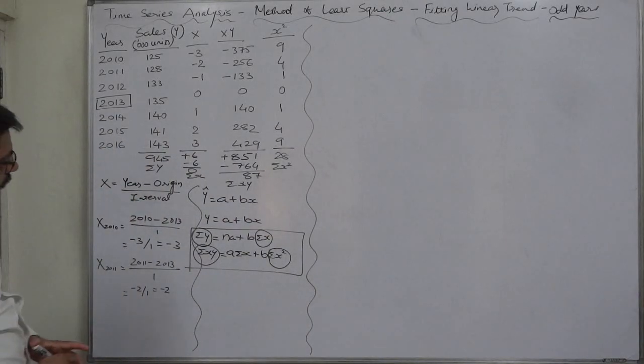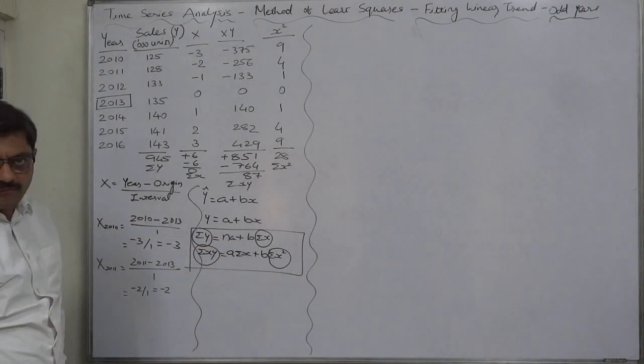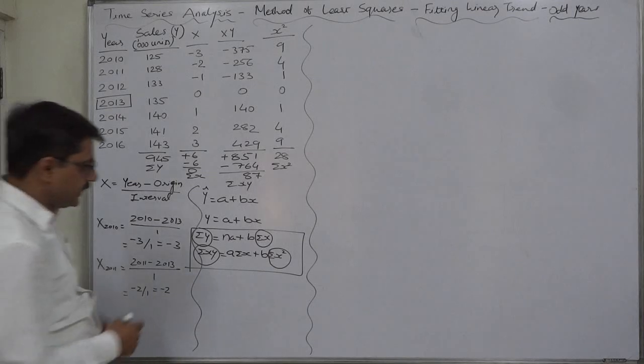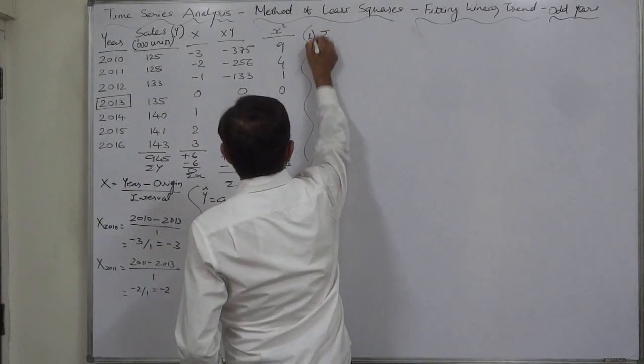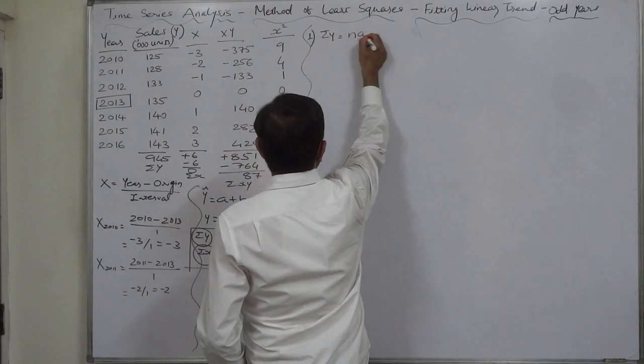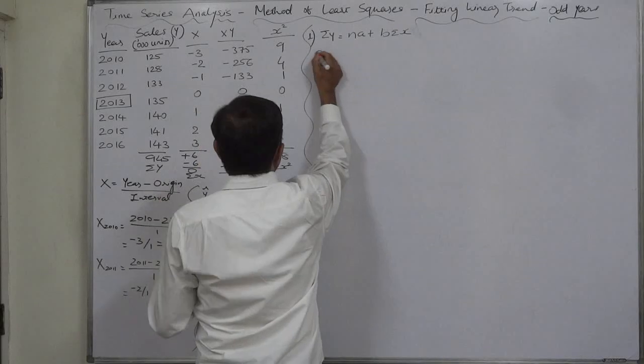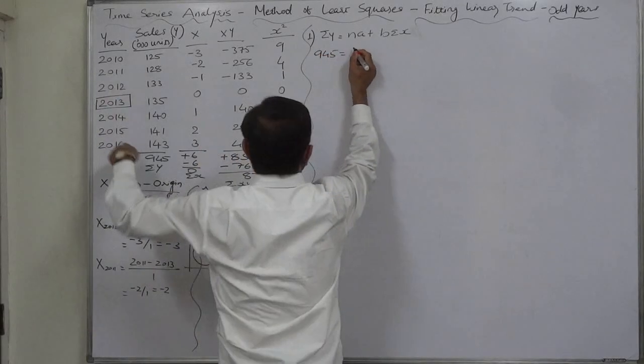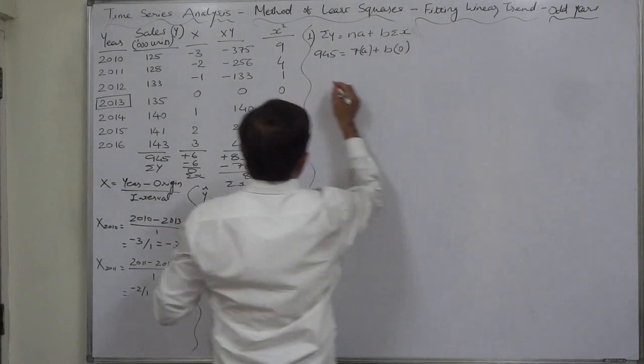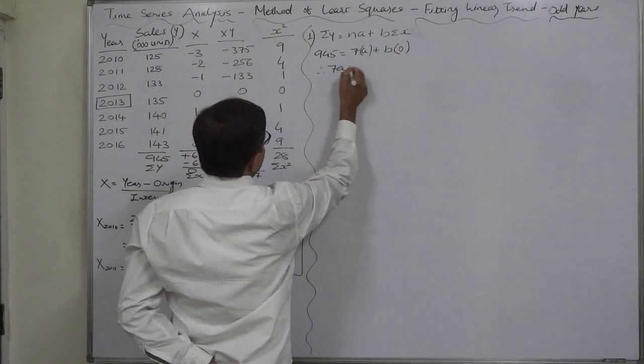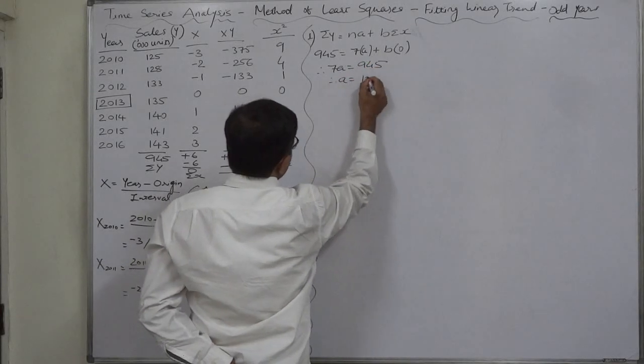Now substituting the summations in these two normal equations we can have values of a as well as b. First is sigma Y equals to na plus b sigma X. Sigma Y is 945, n is 7, b sigma X is 0. So ultimately it is 7a equals to 945, and therefore a is 135.